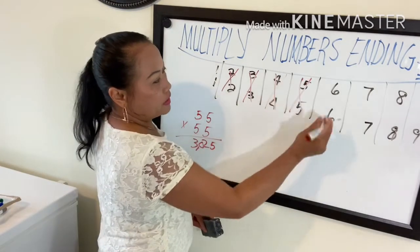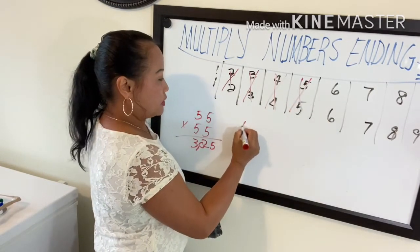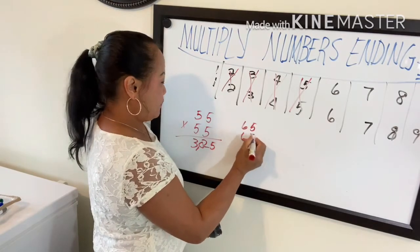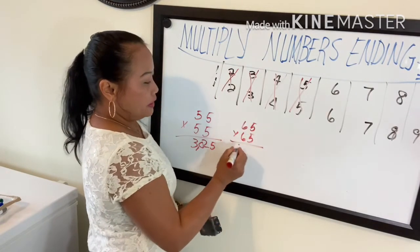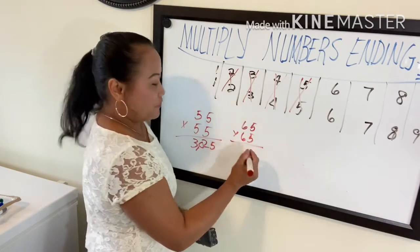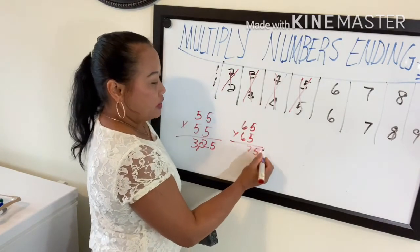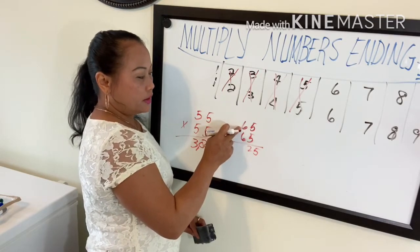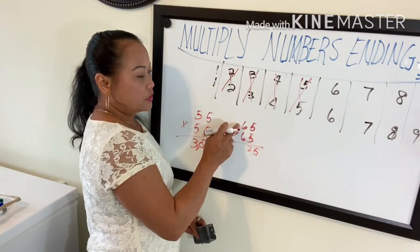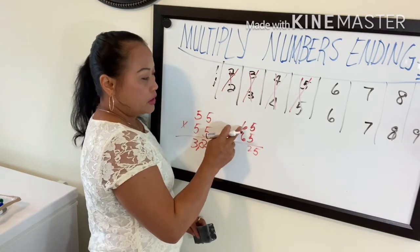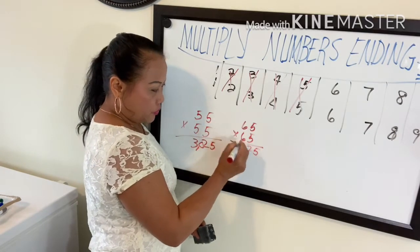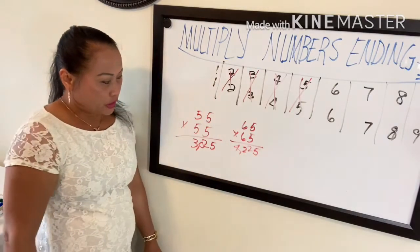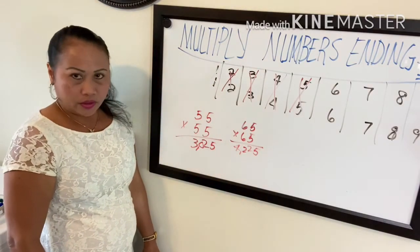Now 65 times 65. Five times five is 25, add one to six — six becomes seven — and seven times six is 42. So the answer is 4225.